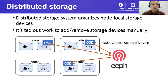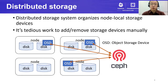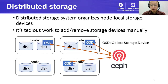First of all, let's take a look at what a distributed storage system is. A distributed storage system organizes node-local storage devices in a computer cluster and provides a unified storage resource for users. In the case of Ceph, for example, the administrator defines object storage devices — or OSDs in short — using local disks, and Ceph gathers OSDs into a storage resource.